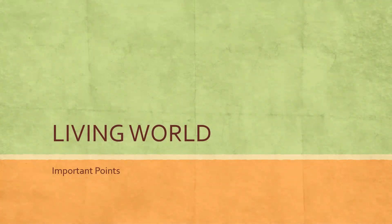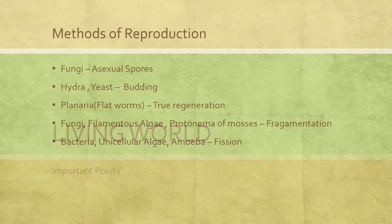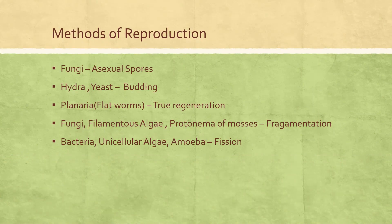Hello everyone, in this video we are going to discuss some important points from the chapter 'Living World' - methods of reproduction. Different organisms show different types of reproduction. Here are a few examples which are given in NCERT.